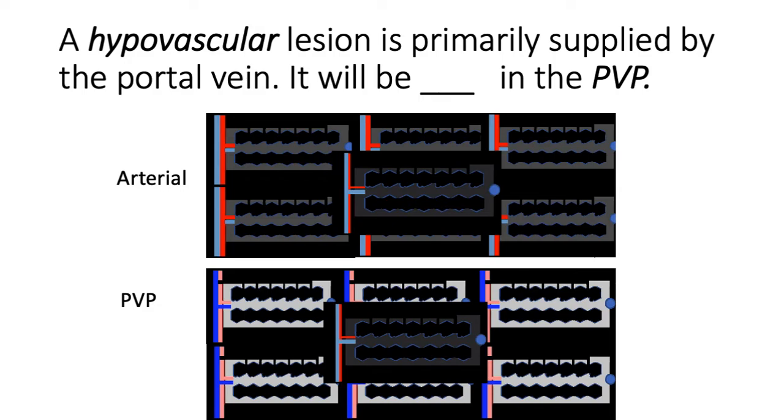Next, hypovascular lesion, which is primarily supplied by the portal vein, will be blank in the portal venous phase.